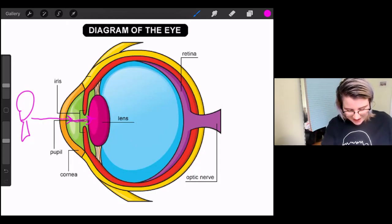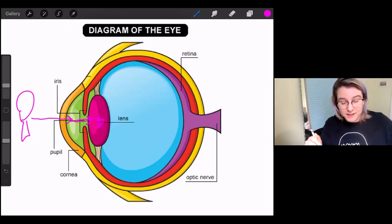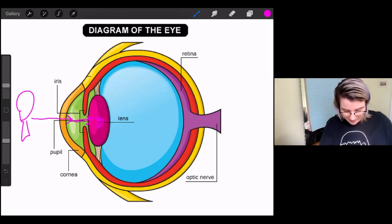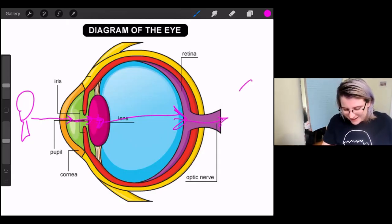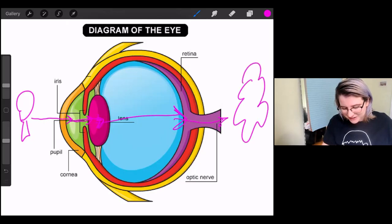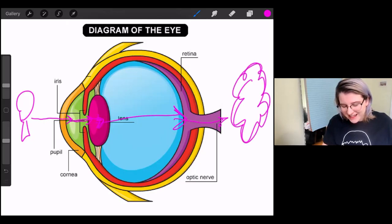Then it hits the lens, which focuses the image, focuses the light. Then it goes over to the retina, which converts that light into an electronic signal. And then it goes through the optic nerve, which sends that electronic signal to our amazing elastic brain.